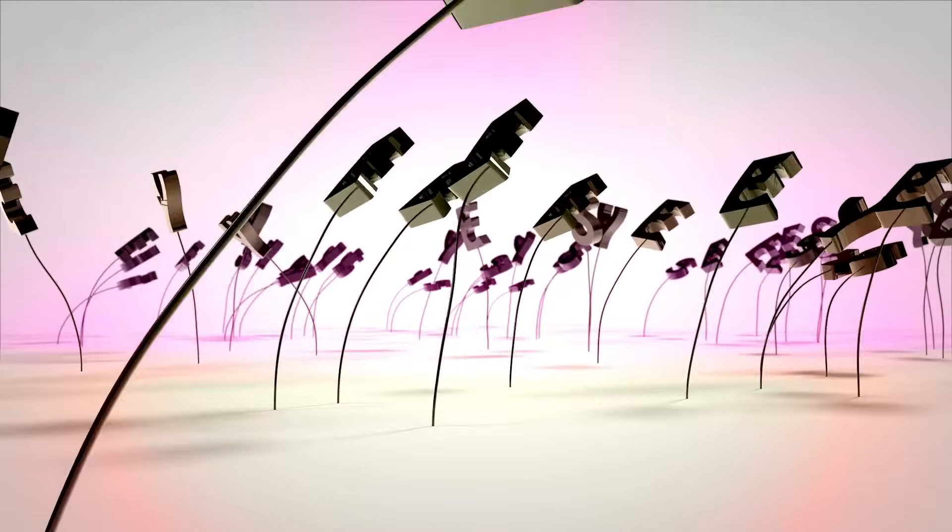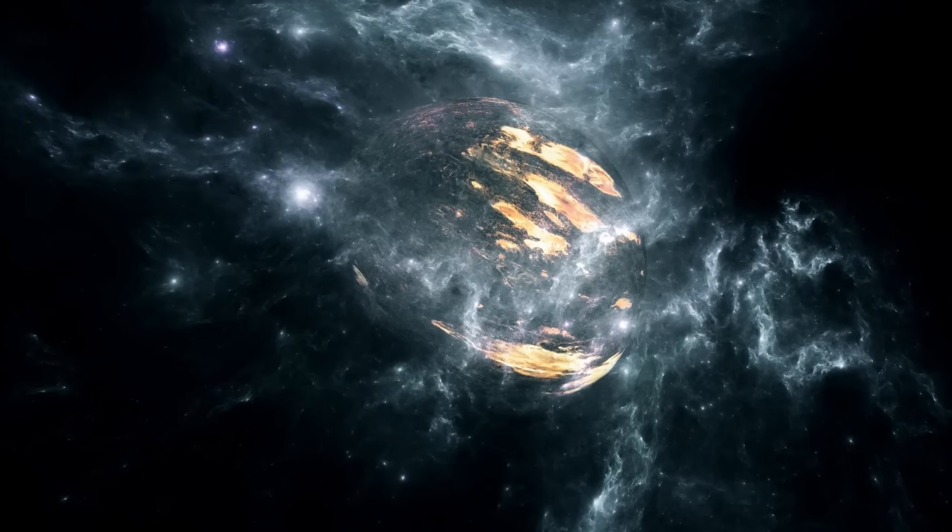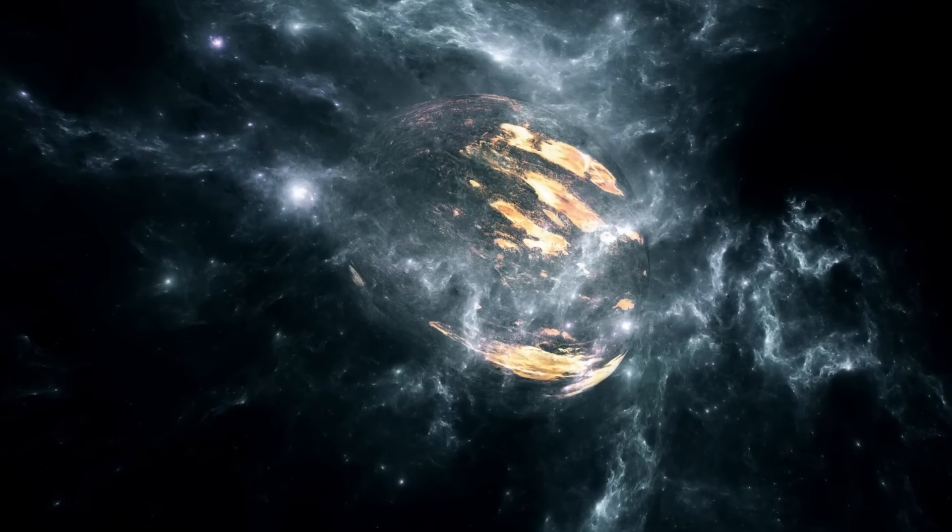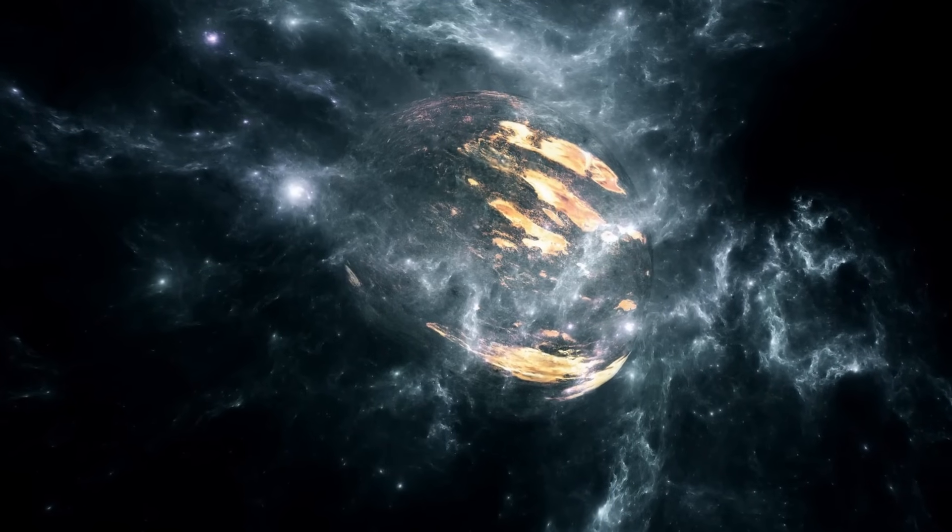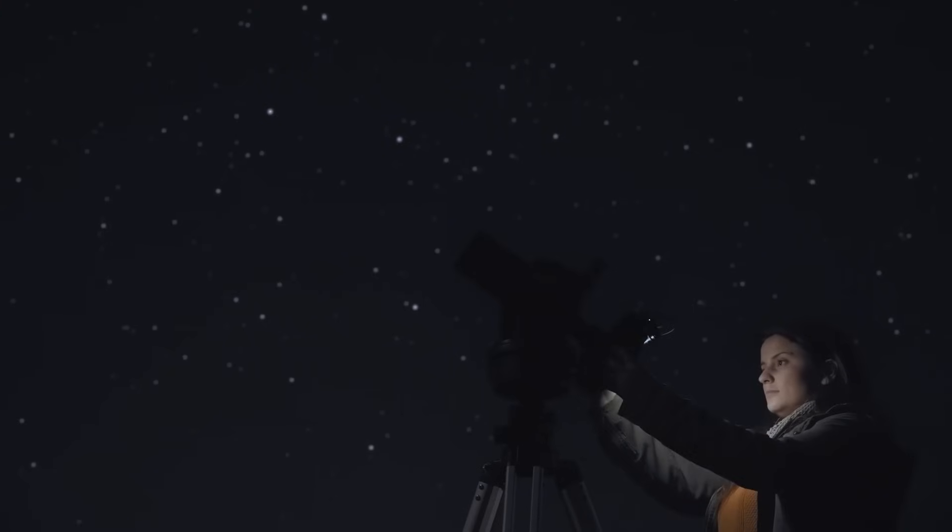Unlike distant supernovae occurring in far-off galaxies, Betelgeuse is a near-neighbor by cosmic standards. When it fully explodes, its light may outshine the full moon, and even be visible in broad daylight.